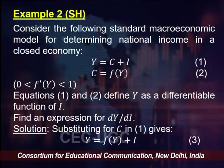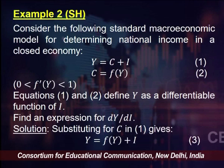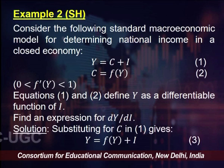Let us move on next to a macroeconomic model for determining national income in a closed economy. National income here is represented by Y and it goes into consumption or investment, so we have Y equal to C plus I.